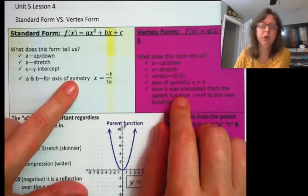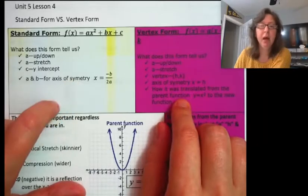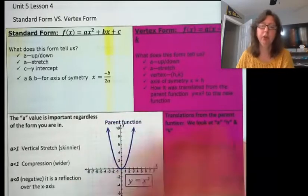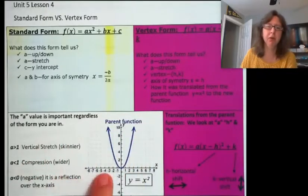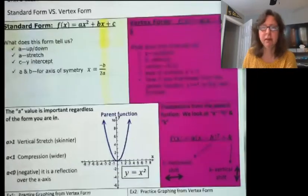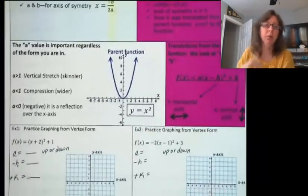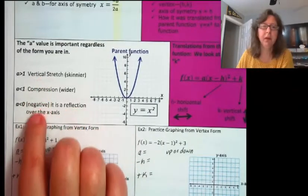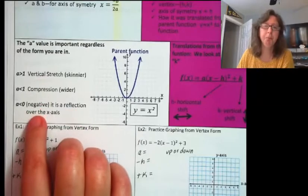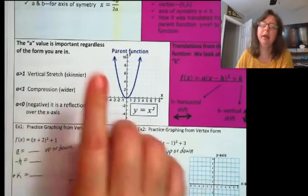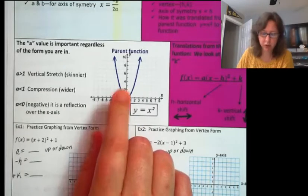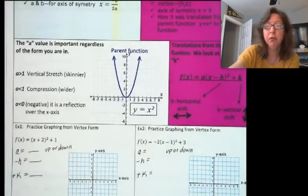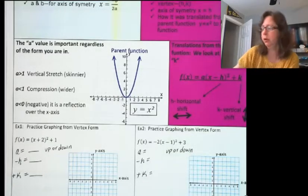Vertex form also shows us how translations have happened from the parent function to the new function. So let's just remember our parent function — we discussed it slightly in our previous lesson. This is just a reminder of what I said about the a values. And here is what the parent function looks like.